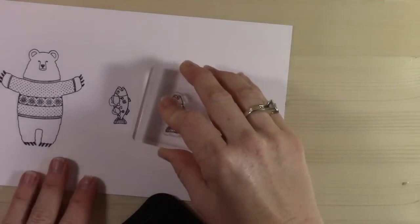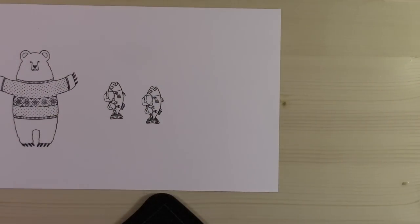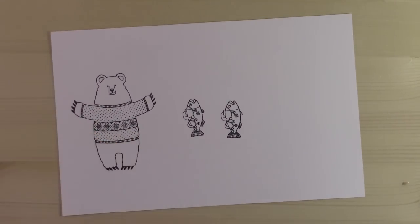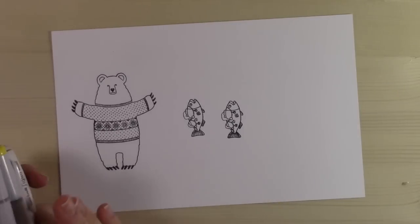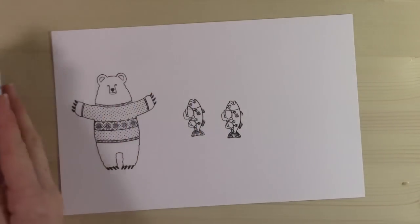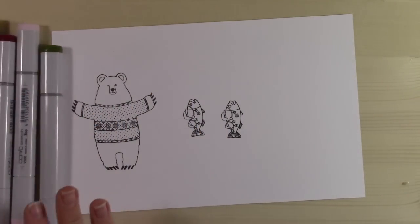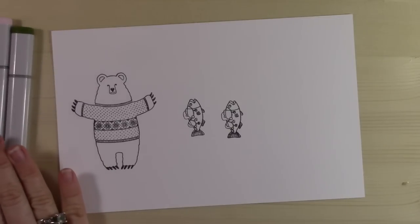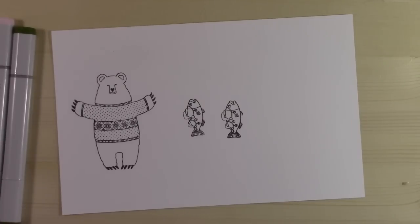I love that Stampin' Up products all coordinate and they make my crafting super easy. But I love coloring, and in order to get a really awesome colored image, you really have to pair the correct cardstock with the correct inks. These are Copic markers. They're alcohol-based markers. I'm sure you're familiar with them if you've ever done any card making. These are not sold by Stampin' Up.